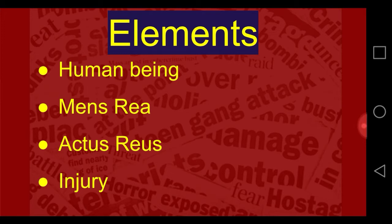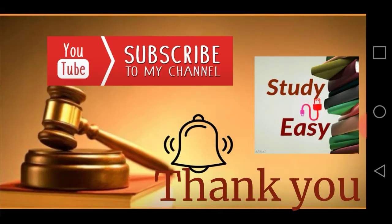So the basic elements are: it should be committed by a human being, the person who committed it should have the intention, and the person should commit some action to cause the injury, and the actual injury should happen because of that action. Thank you, see you in the next video.